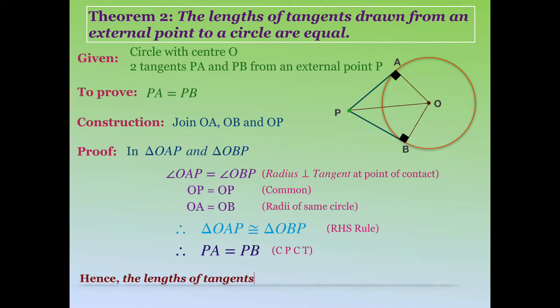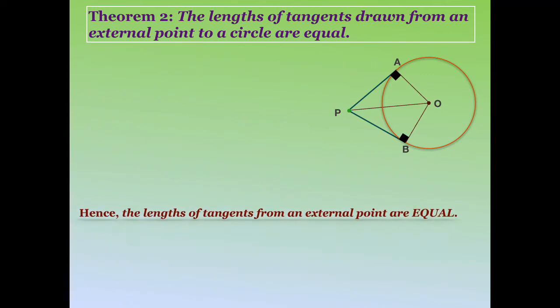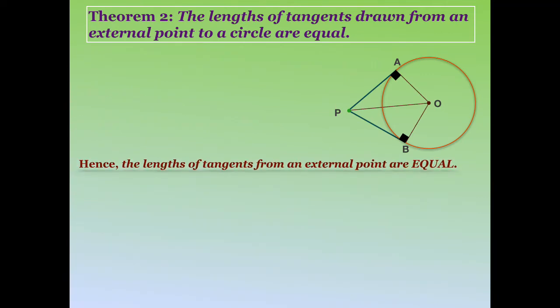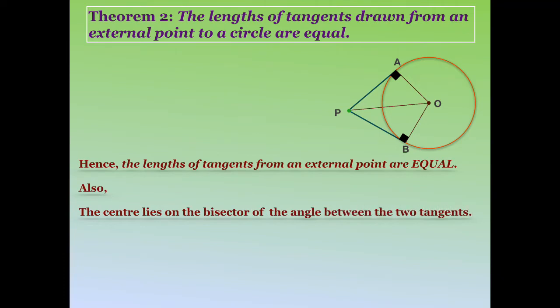Hence the lengths of tangents from an external point are equal. One more result follows from this theorem: the center lies on the bisector of the angle between the two tangents. OP bisects angle APB into two equal parts, and OP also bisects angle AOB into two equal parts.